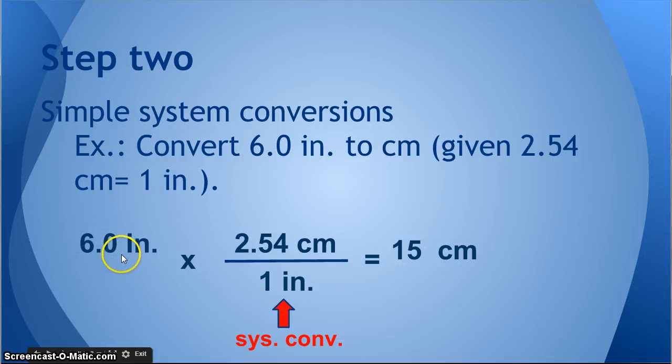So we start with 6.0 inches and multiply by that conversion factor. Notice that the conversion factor is simply a fractional form of this equivalence of 2.54 centimeters to one inch. We could write this as its reciprocal also, but in this case, since we want to cancel inches, we want inches in the denominator. So we want 2.54 centimeters over one inch. Then the inches cancel and we end up with 15 centimeters. That's a simple inter-system conversion.